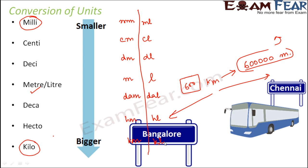Similarly, when measuring weight, the base unit is gram, giving milligram, centigram, decigram, gram, decagram, hectogram, and kilogram. The unit varies depending on what you are measuring. An important thing before conversion is remembering these units — not just the names but also their order, because the order is crucial for converting from one unit to another.